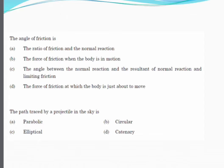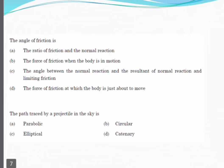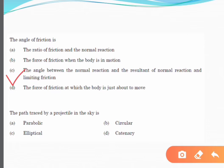The next question asks about the angle of friction. Options include: the ratio of friction and normal reaction; the force of friction when the body is in motion; the angle between normal reaction and resultant of normal reaction and limiting friction; and the force of friction when the body is just about to move. The correct answer is option C — the angle between the normal reaction and the resultant of normal reaction and limiting friction.